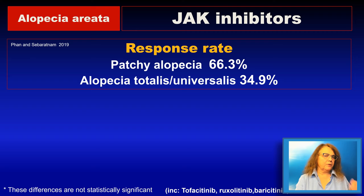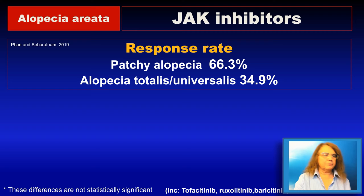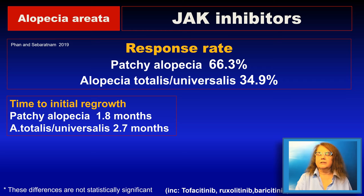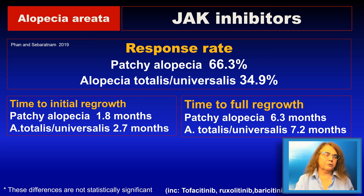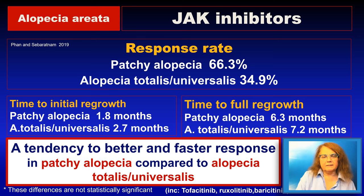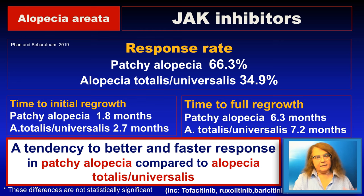There is a recent meta-analysis showing that combining all available data for tofacitinib, ruxolitinib, and baricitinib, the combined response rate in patchy alopecia is higher compared to alopecia totalis or universalis. Time to initial regrowth is shorter — less than two months in patchy alopecia and less than three months in alopecia totalis and universalis. Time to full regrowth is approximately six months for patchy alopecia and over seven months for alopecia totalis or universalis.